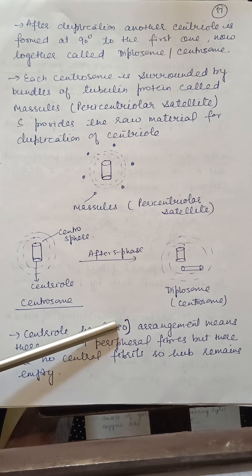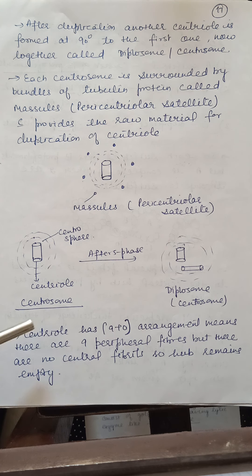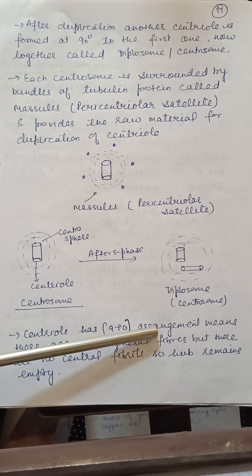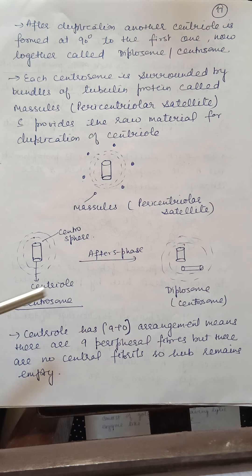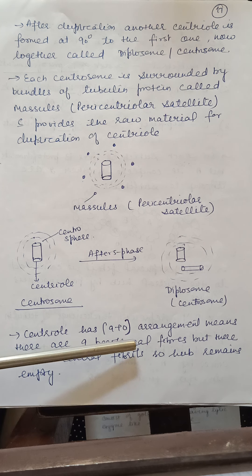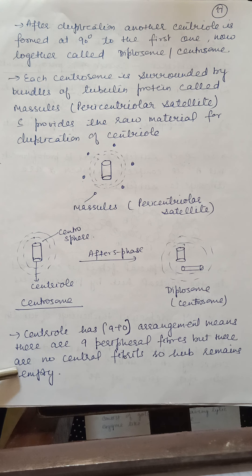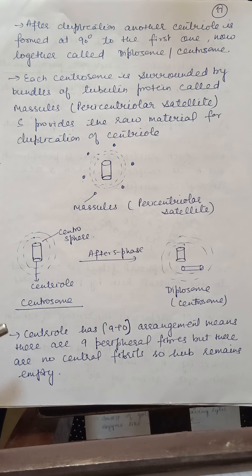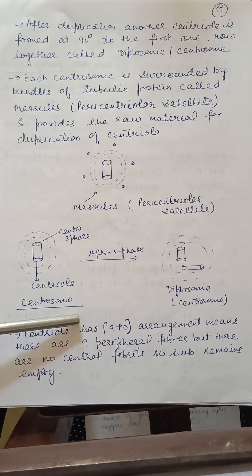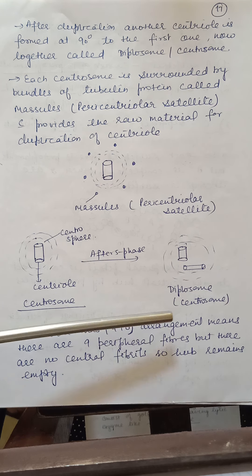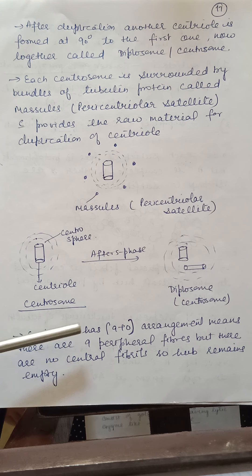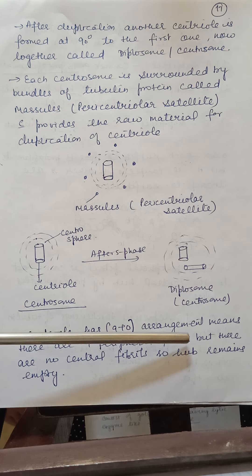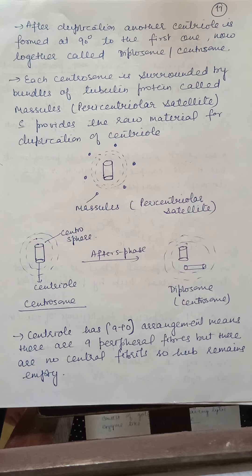The centriole has a 9+0 arrangement, meaning there are 9 peripheral fibers but no central fibers, so the hub remains empty. This will be clearer when the diagram is shown.